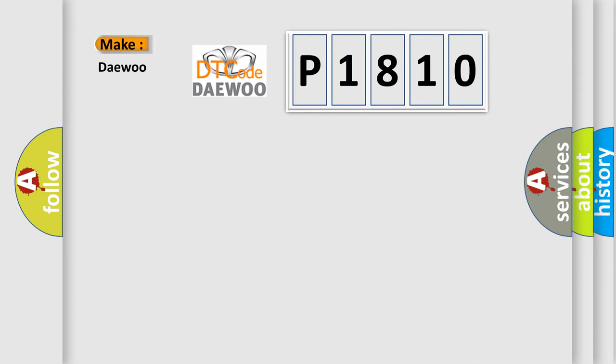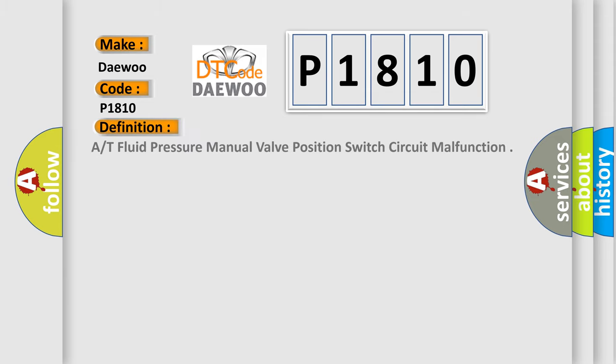So, what does the Diagnostic Trouble Code P1810 interpret specifically for EU car manufacturers? The basic definition is At fluid pressure manual valve position switch circuit malfunction.